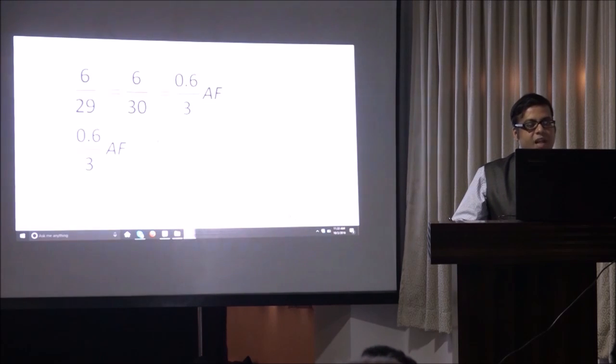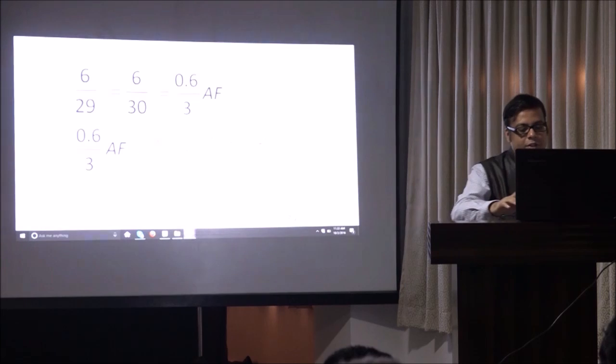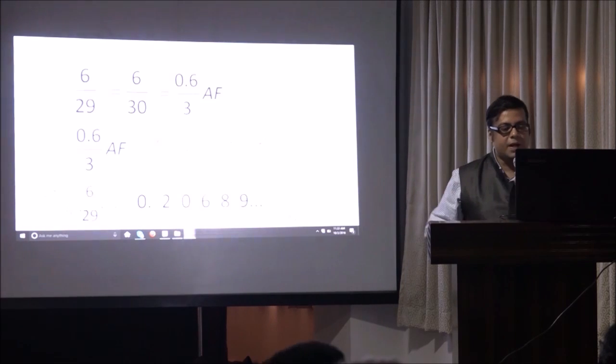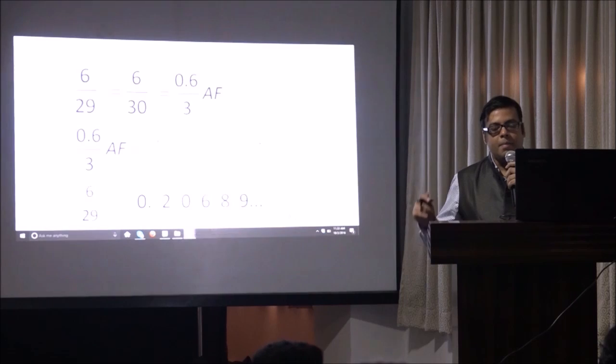So 6 by 3 gives us 2, remainder 0. 0.2 by 3 is 0, remainder 2. 20 by 3 is 6, remainder 2. 26 by 3 is 8, and remainder 2. And that goes on. And you can check your answers. 6 by 29 is 0.20689.